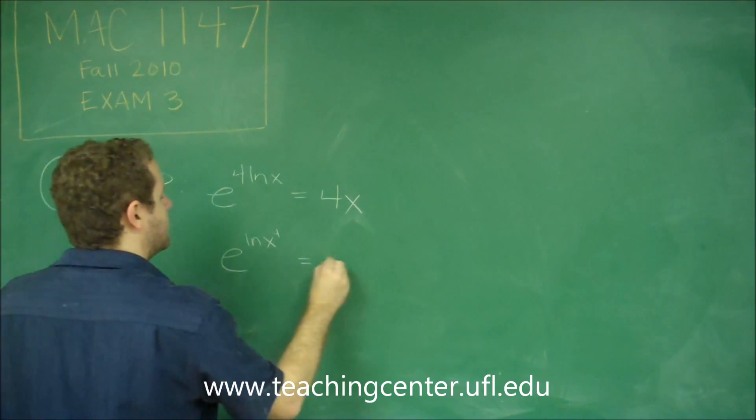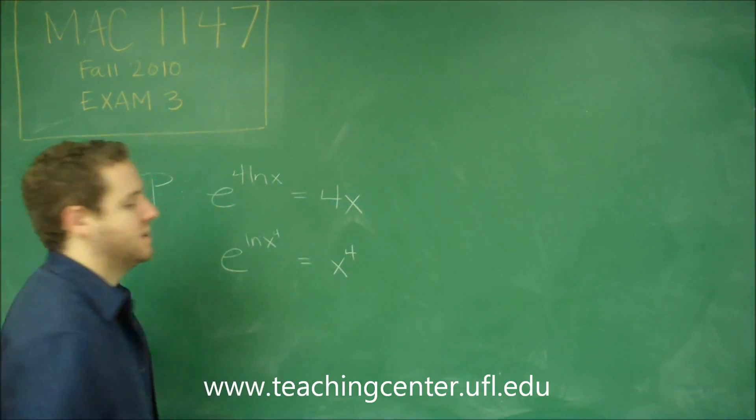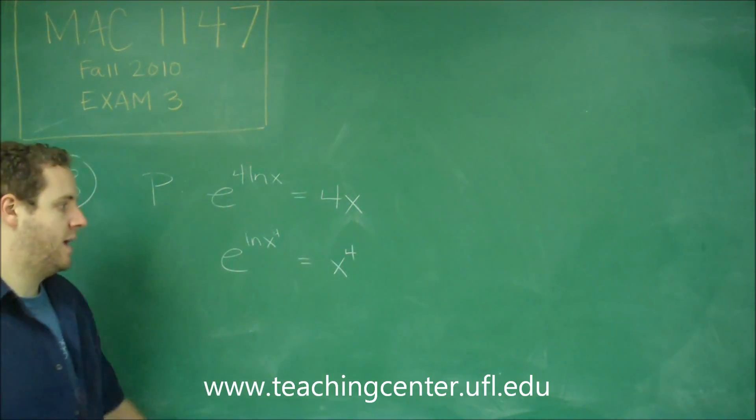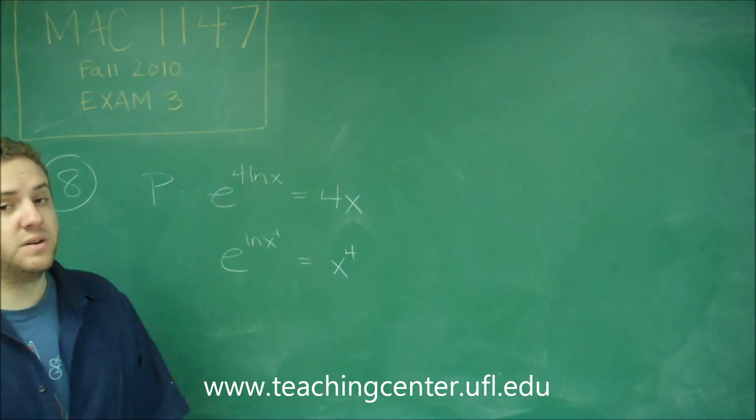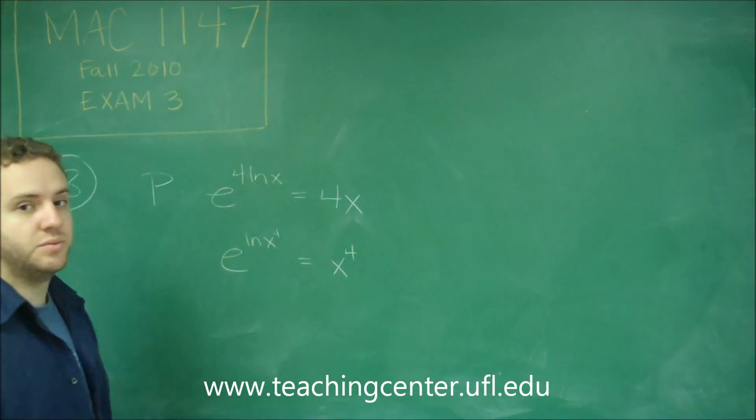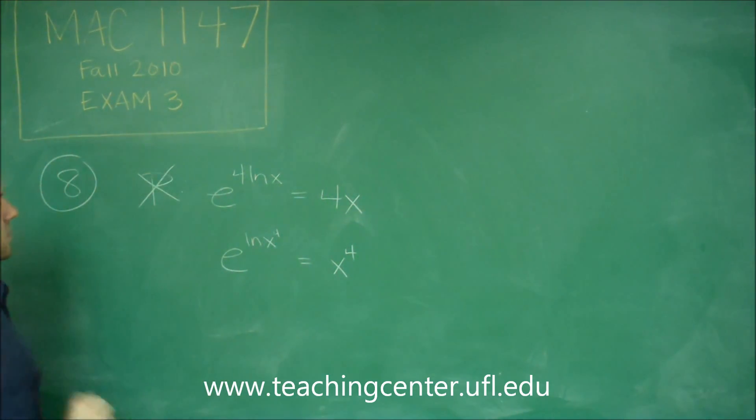E to the LN of X to the 4, then, is X to the 4, because the E and the LN cancel out. X to the 4 and 4X are not the same thing, so this is not true. So P, we have it as false.